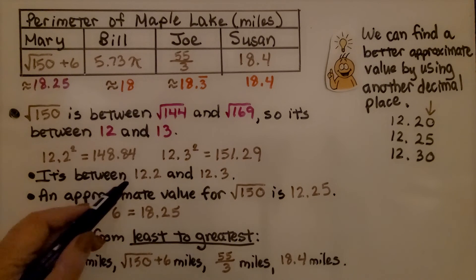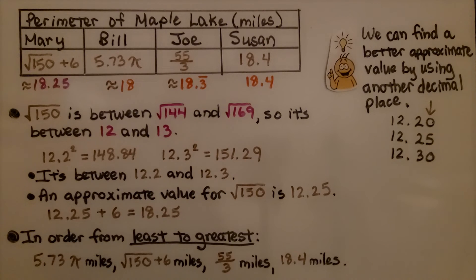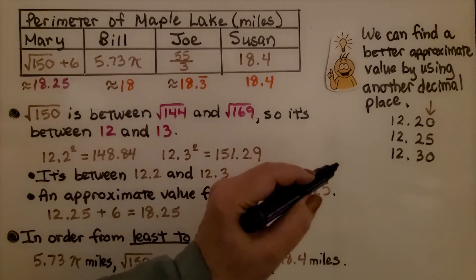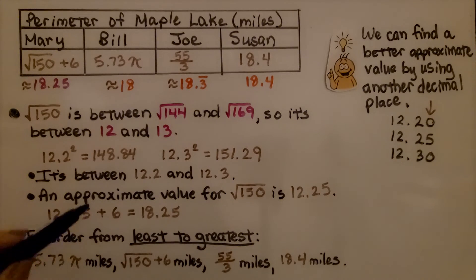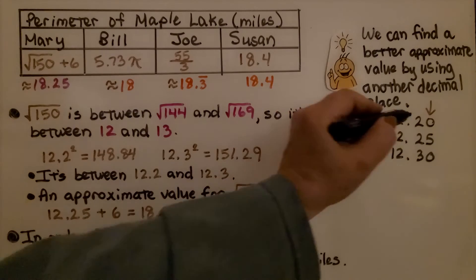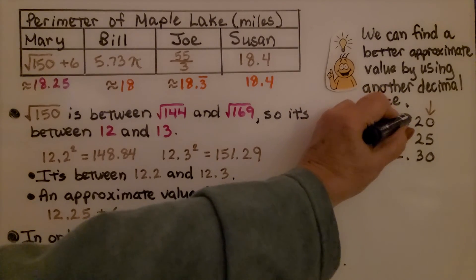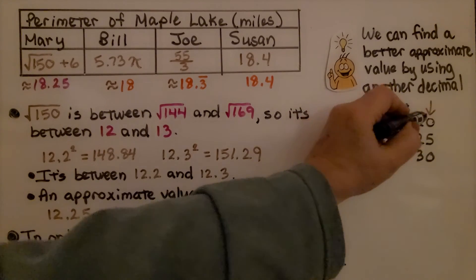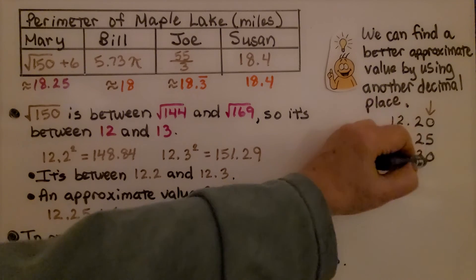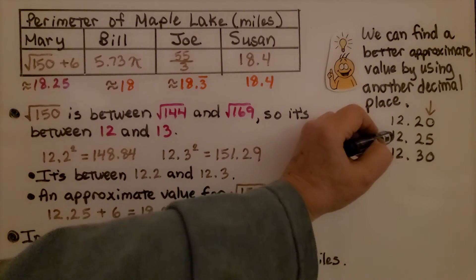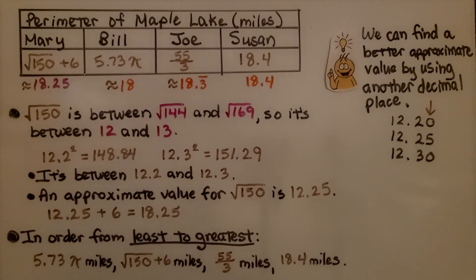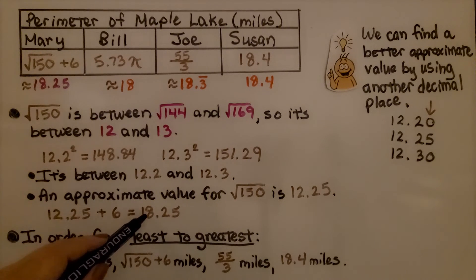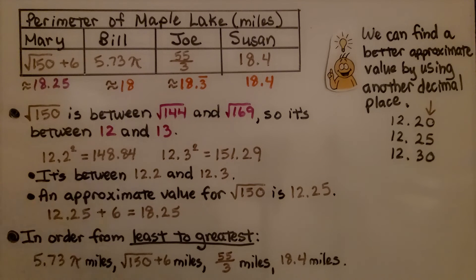An approximate value for the square root of 150 is 12.25. It's in between 12.2 and 12.3. We can find a better approximate value by using another decimal place. We write 12.20 and 12.30, and what comes in between 20 and 30? 25. So we can approximate it as 12.25. We need to add 6 to it, because it says plus 6, so we get 18.25 for Mary's.